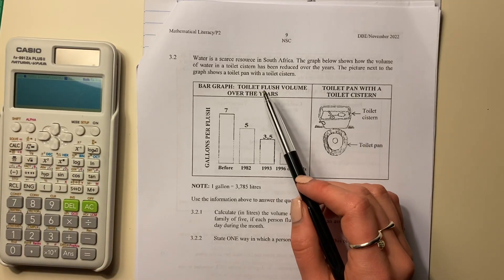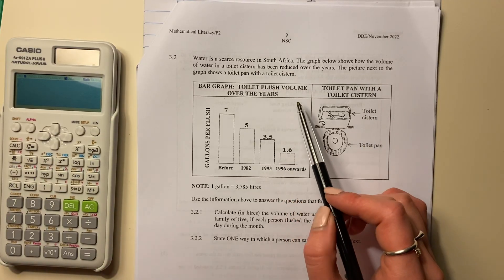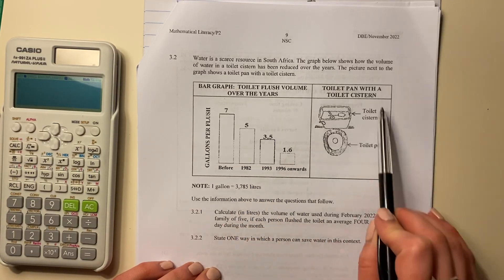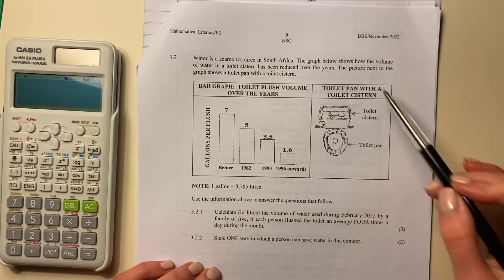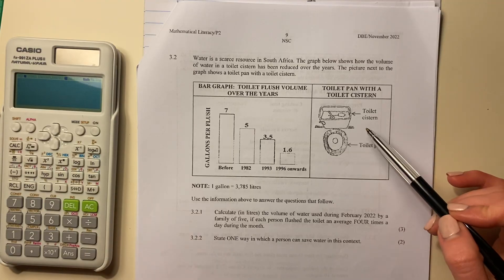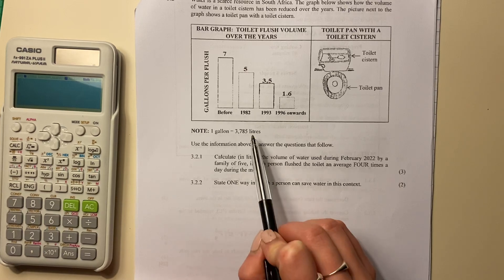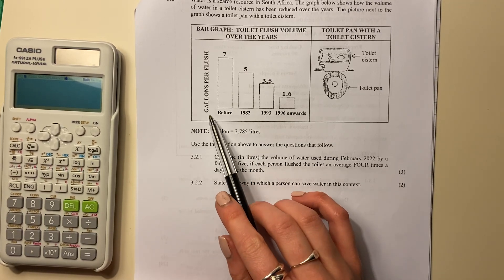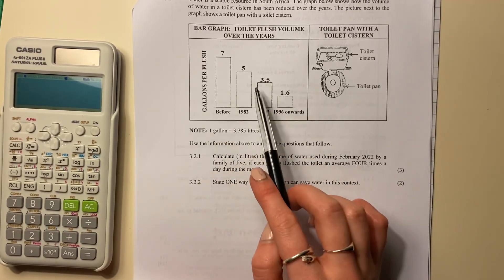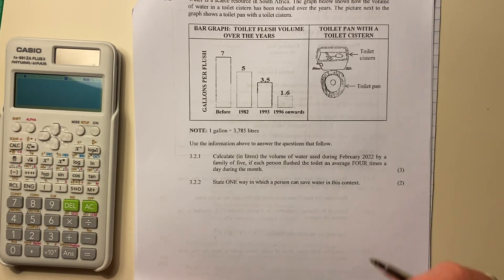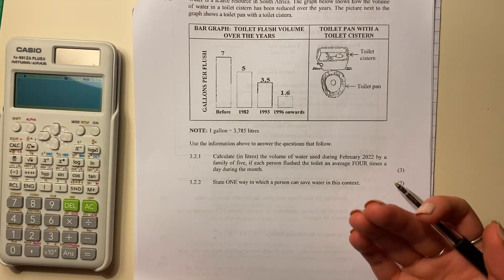The picture next to the graph shows a toilet pan with a toilet cistern. So we can see here that it's been decreasing over the years and this is basically just showing you how a toilet works. It's also giving you some conversions here, saying one gallon to the number of liters. That's quite important because this graph is shown in terms of gallons, so we need to make sure that we can also convert it into something that we understand, which is liters.